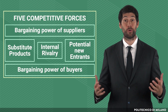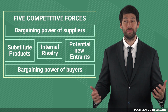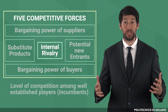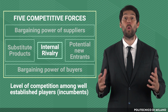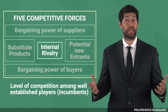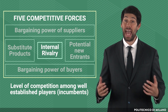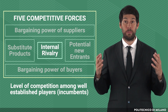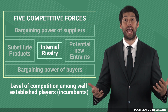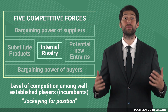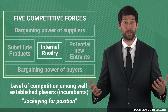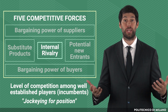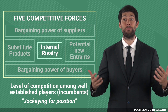In the five competitive forces model, the force of internal rivalry refers to the level of competition among well-established players or incumbents. The act of competing with other incumbents within a given business is also known as jockeying for position, as players make strategic moves to change their positioning and displace competitors.